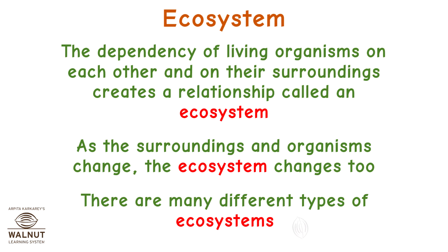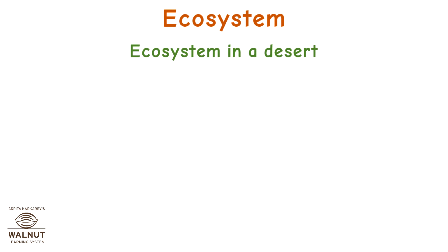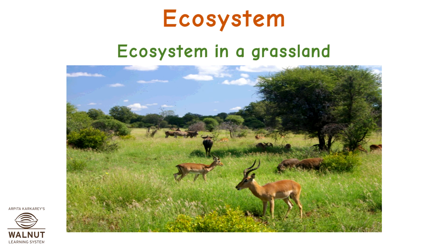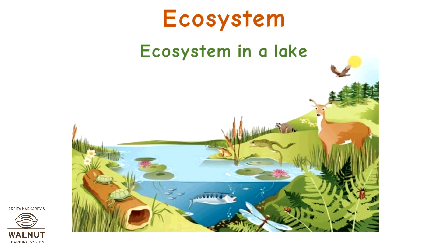There are many different types of ecosystems — ecosystem in a desert, ecosystem in a grassland, and ecosystem in a lake.